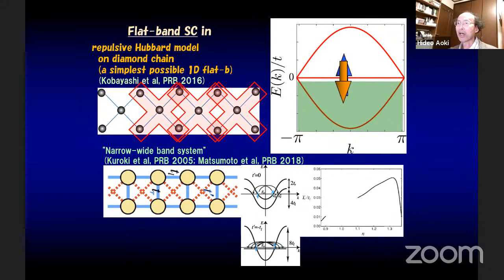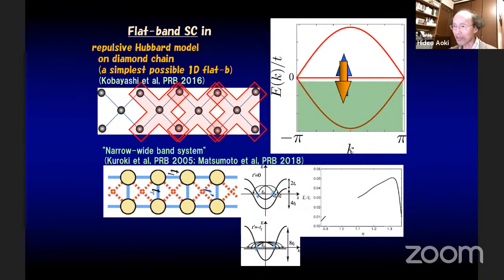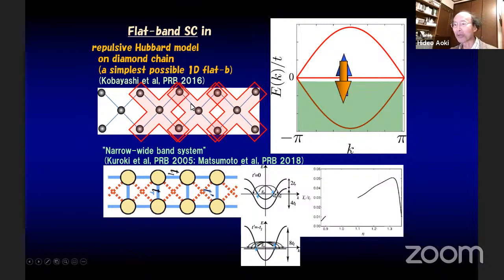This is closely related to the narrow-wide band system considered by Kazuhiko Kuroki back in 2005 — a cross-linked two-leg ladder with narrow and wide bands. The physics is: this is the flat band, this is the dispersive band. Let's assume Fermi energy is here on the dispersive band, so Cooper pairs reside on the dispersive band. Due to many-body interaction, there is quantum mechanical pair scattering between the dispersive band and the flat band, which very much enhances TC. One feature of flat bands is we can't have orthogonal Wannier states — this is a specialty of flat bands.